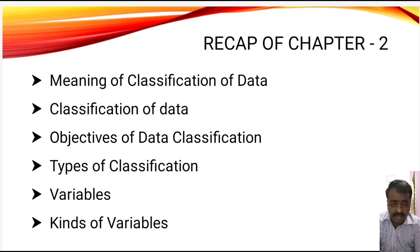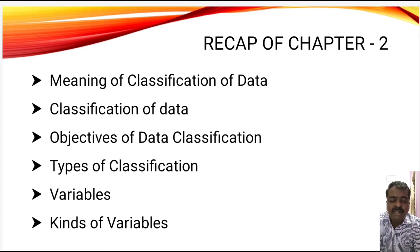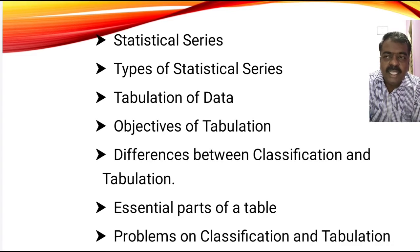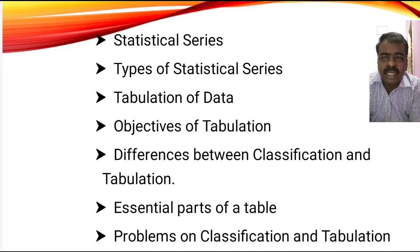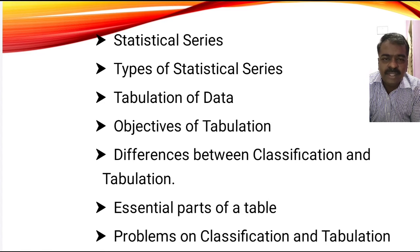We discussed what the different types are, and what we mean by a variable. We have three different variables: individual variable, discrete variable, and continuous variable. Further, a statistical series is an arrangement of data in a systematic manner which follows a logical method. The different types of statistical series are: individual series, discrete series, and continuous series.